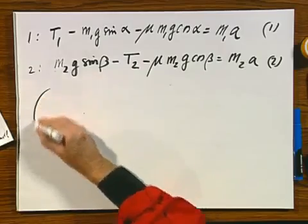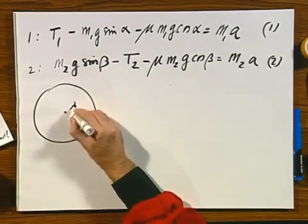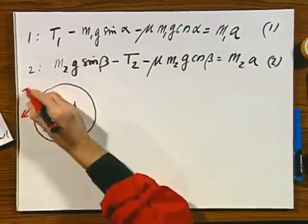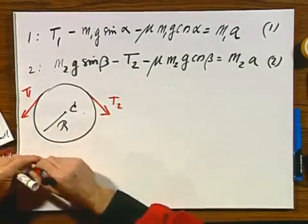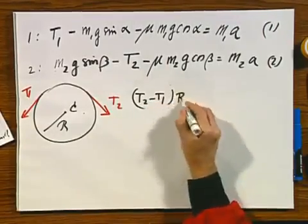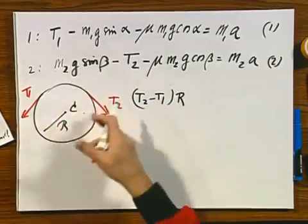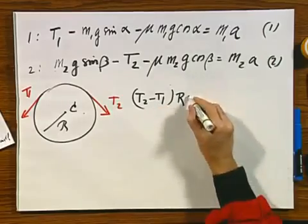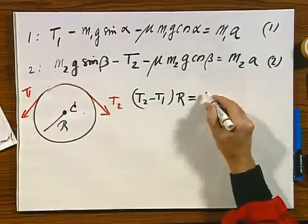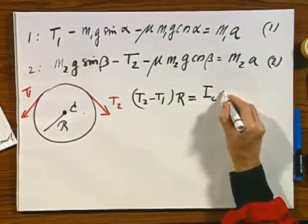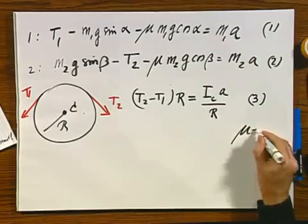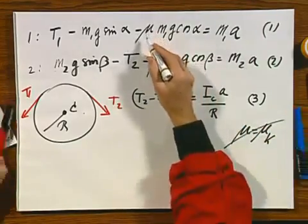I now have here the pulley, point c, radius r. The pulley experiences here a tension T1 and a tension T2. So I can write down for the pulley that T2 minus T1 times r, that is the torque. T2 is clockwise so it's positive. T1 is counterclockwise so that's negative. That is Ic times alpha. I'm going to get rid of my alpha, so that is I relative to point c times a divided by r. And this is my third equation. Every time where I have mu, I should really have written mu k, but I'm a little lazy.